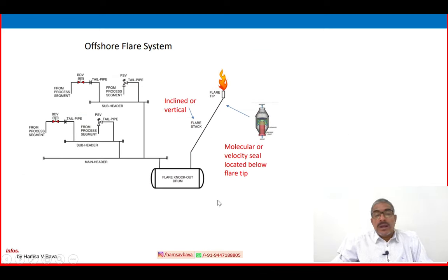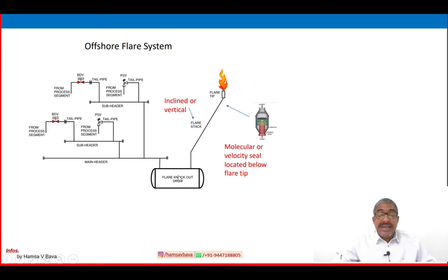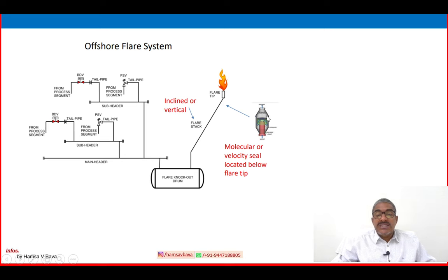Offshore, due to space constraints, the system is not as large or detailed as an onshore system. The knockout drum is present, but the seal system is generally not included. The flare stack may be inclined or vertical with a flare tip. Instead of a liquid seal system, a molecular or velocity seal is used below the flare tip as the flashback prevention method.